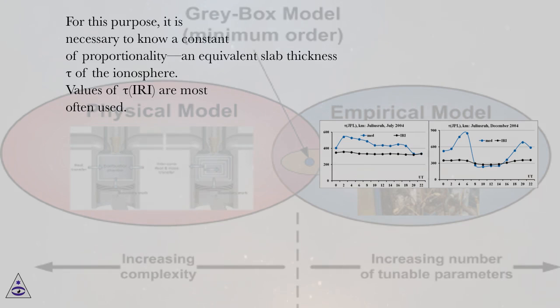For this purpose, it is necessary to know a constant of proportionality, an equivalent slab thickness tau of the ionosphere. Values of tau IRI are most often used.